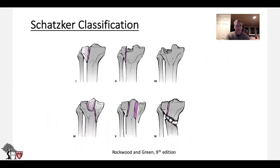Everyone is probably familiar with the Schatzker classification, type 1 through 6, with increasing severity of injury. Type 1 is the simple split. Type 2, the more common one we see, is a split-depressed pattern. Type 3 is an isolated depression. Type 4 swings over to the medial side, with the lateral side still intact. Type 5 is a bicondylar, and type 6 is with no connection between the metaphysis and the joint. The 5 and 6 are the higher energy ones.